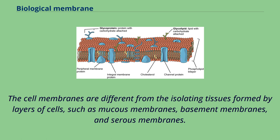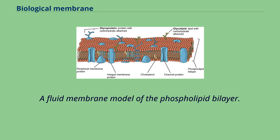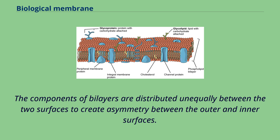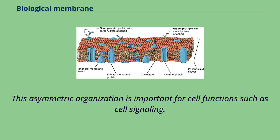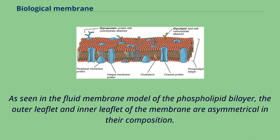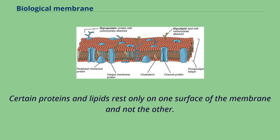In the fluid membrane model of the phospholipid bilayer, the lipid bilayer consists of two layers: an outer leaflet and an inner leaflet. The components of the bilayers are distributed unequally between the two surfaces to create asymmetry between the outer and inner surfaces. This asymmetric organization is important for cell functions such as cell signaling. The outer leaflet and inner leaflet are asymmetrical in their composition — certain proteins and lipids rest only on one surface of the membrane and not the other.